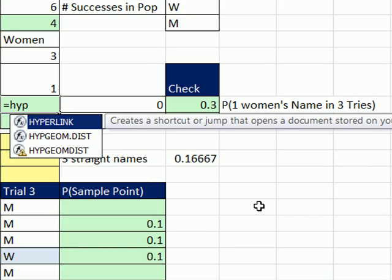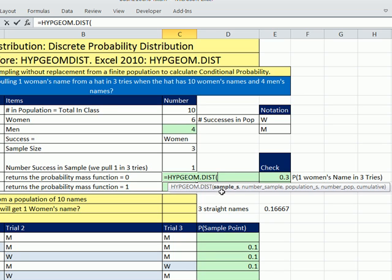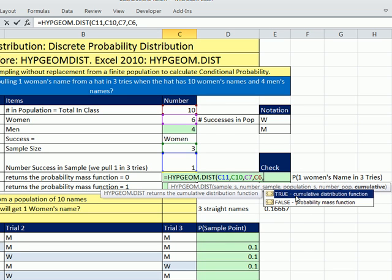Now let's see how to do this with our new function. So equals, and we can pick here. This is the old compatibility one, but we're going to see that this one does some new things. So I'm going to double click here. Just as we saw in the last video, sample successes, that's 1, comma, number in sample. We're pulling three times. Population successes, 6. Number in the population, 10, comma, and now we have this. This is a new fifth argument for cumulative or probability mass. Now probability mass just means that's what we're calculating. In the older one, that's all the older function did. But now we can put a 0 here. And then I'll calculate our answer.